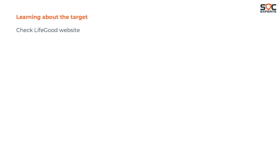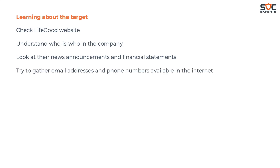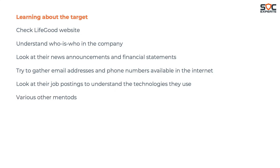They start by learning more details about their target. They check the Lifegood Pharmaceutical website, understand who is who in the company like CEO, CFO, CMO, and learn more by going through news announcements and financial statements. Attackers also gather email addresses and phone numbers from the internet, and gain insights about technologies used by going through job postings. They employ various other methods to gather as much information as possible.